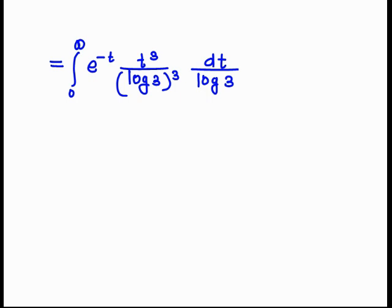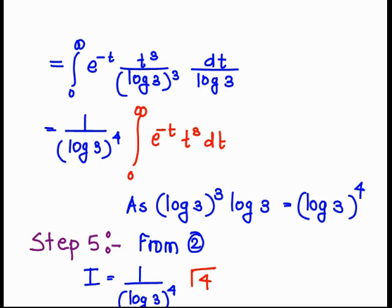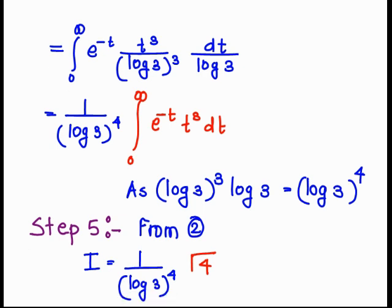Taking the constant outside, we get 1 upon log 3 raised to 4, times the integral from 0 to infinity of e raised to minus t times t raised to 3 dt. This is because log 3 raised to 3 times log 3 equals log 3 raised to 4. By the definition of the gamma function, the integral from 0 to infinity of e raised to minus t times t raised to 3 dt is gamma of 4.